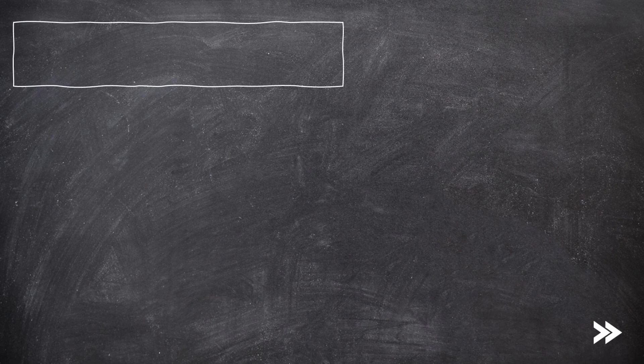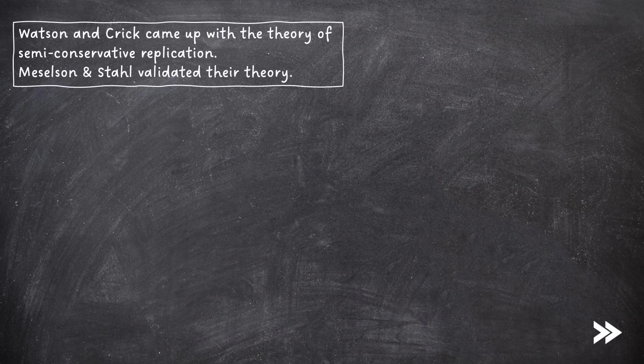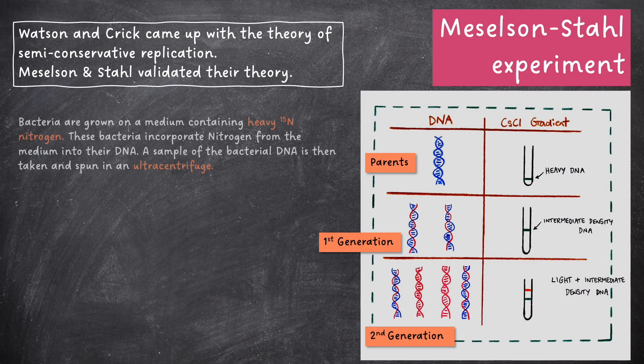Now that we've looked at the process of semi-conservative replication, we need to look at how scientists proved that the Watson and Crick semi-conservative model of DNA replication was actually true. The theory of semi-conservative replication was validated by the Meselson and Stahl experiment. In this experiment, bacteria were grown on a medium containing heavy 15N nitrogen. These bacteria incorporate the nitrogen from the medium into their DNA. A sample of the bacterial DNA is then taken and spun in an ultracentrifuge, and we obtain a heavy band of DNA.